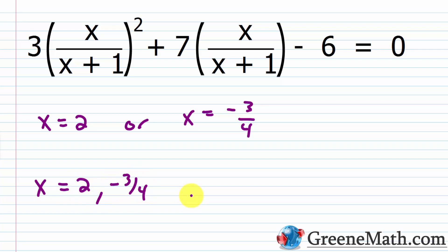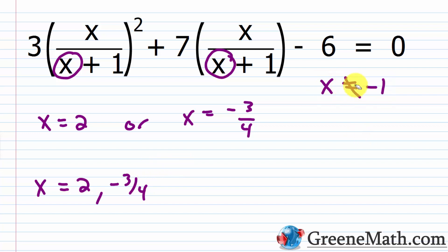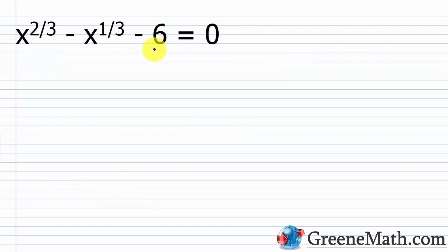Notice we did not get x = -1, so neither solution violates the domain restriction. Our solutions are x = 2 or x = -3/4. For the last example, we have x to the power of 2/3 minus x to the power of 1/3 minus 6 equals 0. Notice that 1/3 doubled is 2/3, so this again follows the quadratic-in-form pattern.